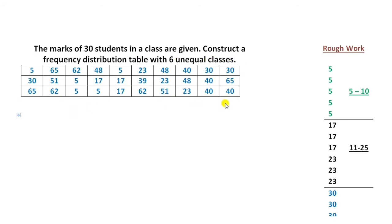First, make a space in the right-hand side of your answer script. Give a heading of rough work. Now arrange the data in ascending order, which means from smallest number to the largest number.